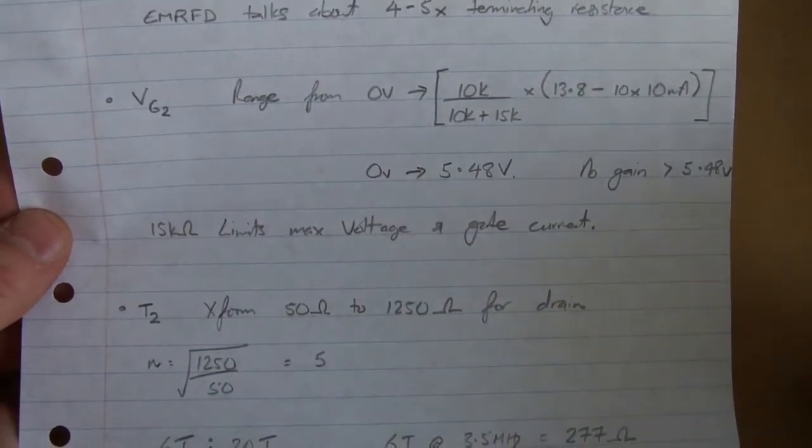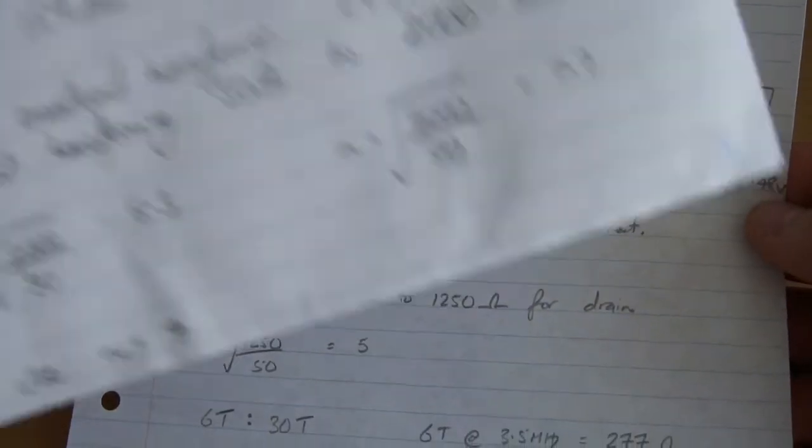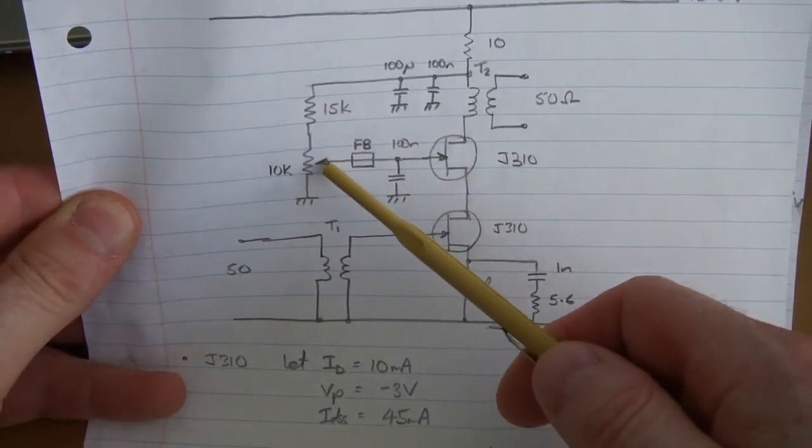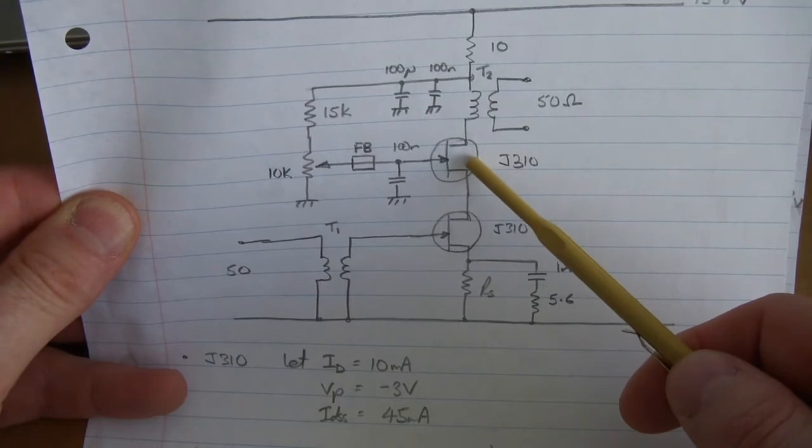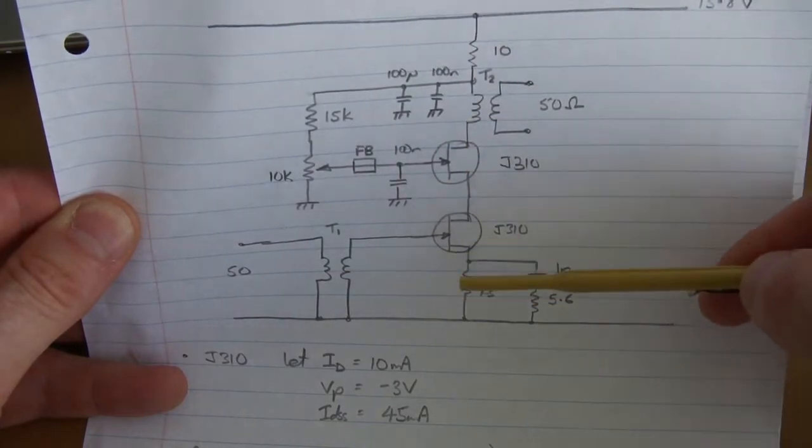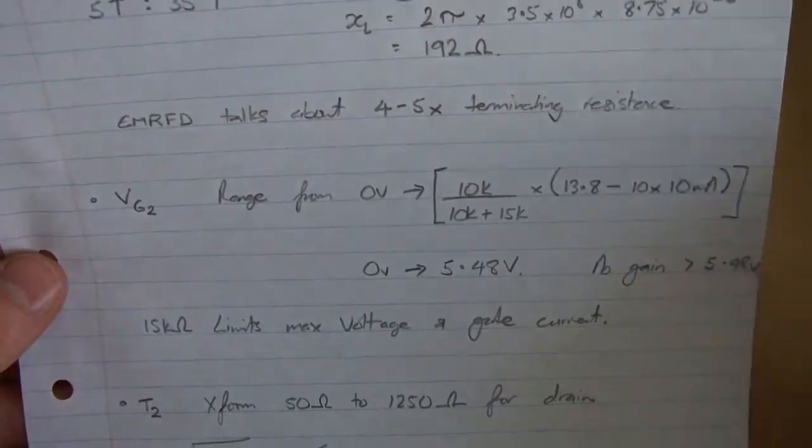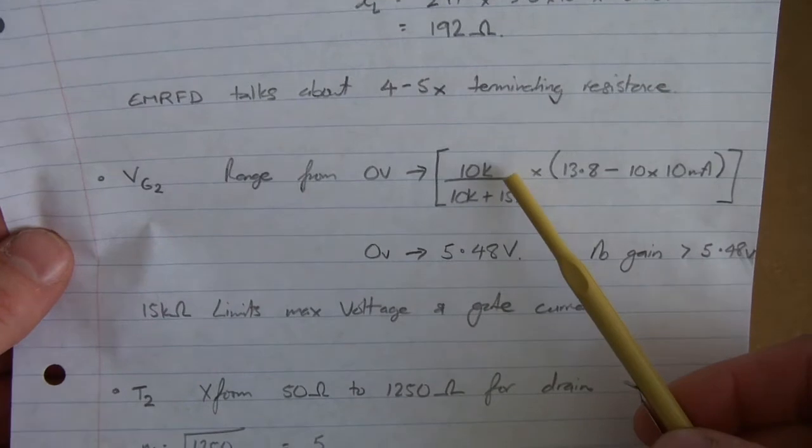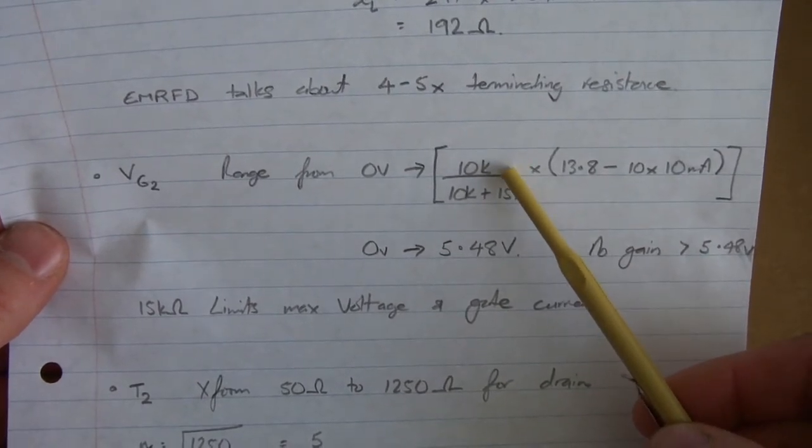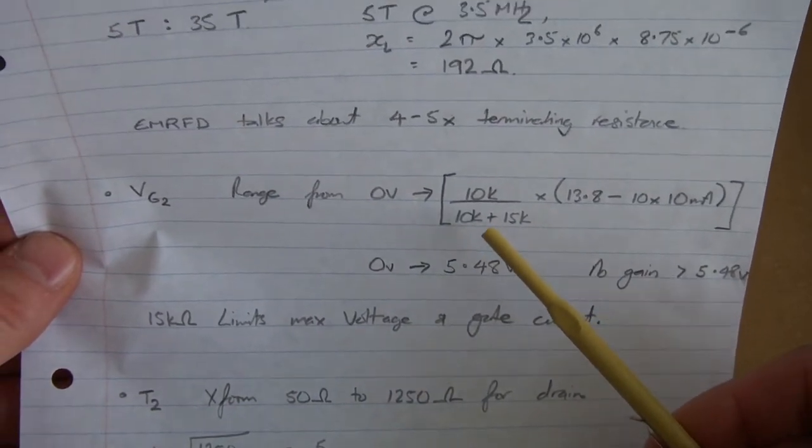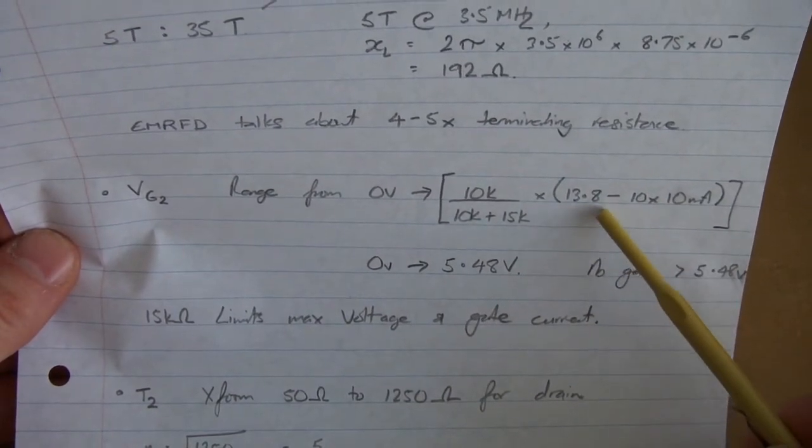We talked about the voltage on that gate. So in terms of this voltage divider network here providing the bias for that second JFET, which then ultimately varies the overall current going through the cascode system. We can range from zero volts, which is at the lowest point, to fully across the 10k pot. So 10k divided by 10k plus 15k. It's a standard voltage divider biasing. And then just take into consideration that 0.1,